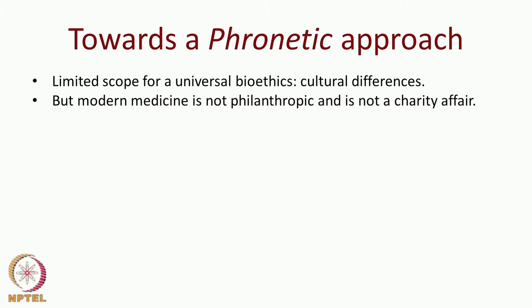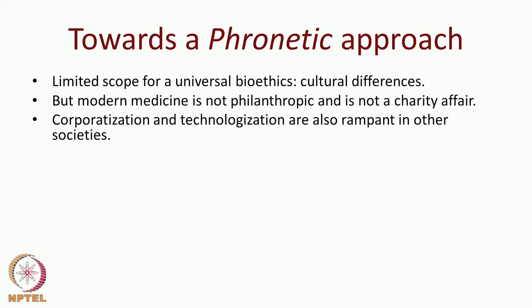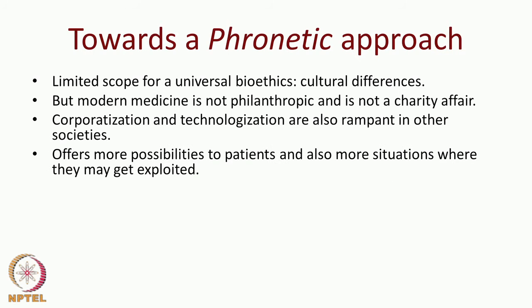What we arrive at is a realization that there is only very limited scope for a universal bioethics, because cultural differences cannot be neglected. But at the same time, modern medicine is not philanthropic — it is highly backed by industrial interests, profit maximization, and various power structures. The most vulnerable entity is the individual, so there is a need to come up with ways to protect the individual. Corporatization and technologization are also rampant in non-European societies.